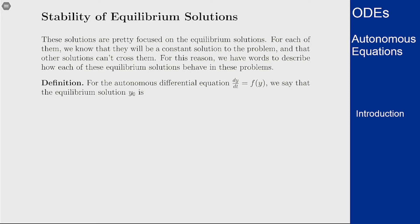We have words to describe these solutions to determine how they're going to behave in the context of these equations. So if we have an equilibrium solution y₀ to a differential equation, we say that solution is asymptotically stable, or just stable, if all solutions that start near that equilibrium solution will stay near and converge to it as t goes to infinity.